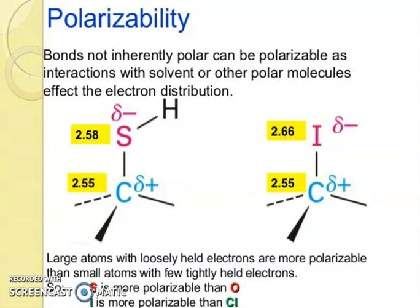So bonds not inherently polar can be polarizable as interaction with the solvent or other polar molecules affect the electron distribution. You can see 2.55 and 2.58 for sulfur. And this is for iodine, 2.55. Now it becomes 2.67. So large atoms with loosely held electrons are more polarizable than small atoms with few tightly held electrons. So sulfur is more polarizable than oxygen. And iodine is more polarizable than fluorine.